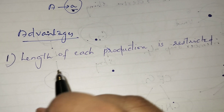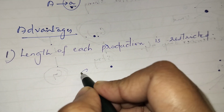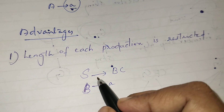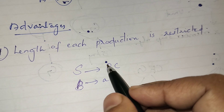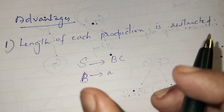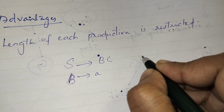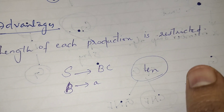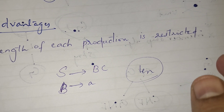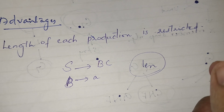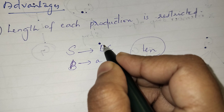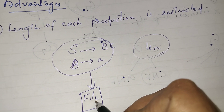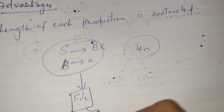The first advantage is that the length of each production is restricted. For example, A → BC, B → a. No production can be very long; every production has a specified length. If we are trying to save a production in a file and represent it as a data structure — say a linear data structure like an array — we need to know the maximum size of the production.